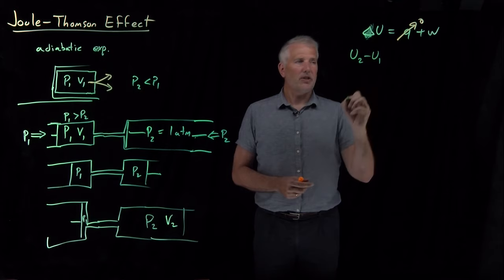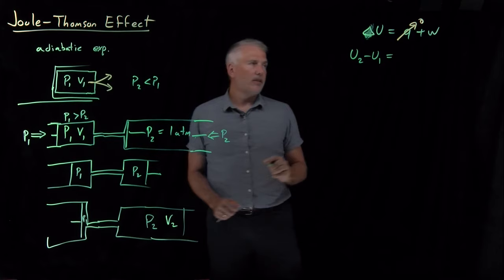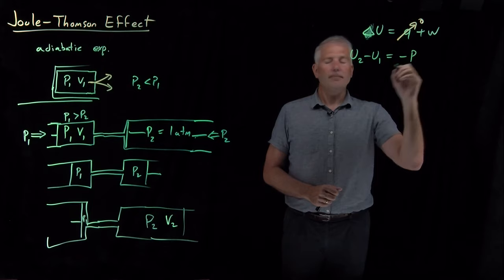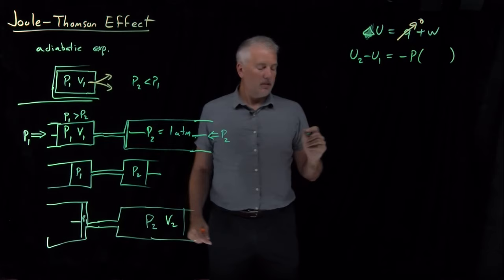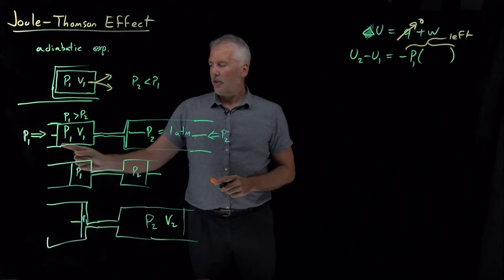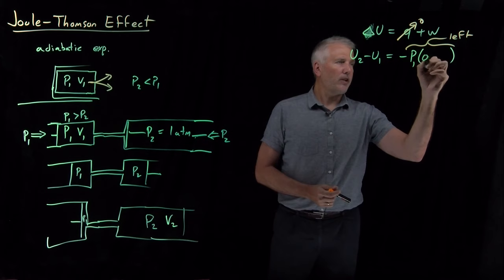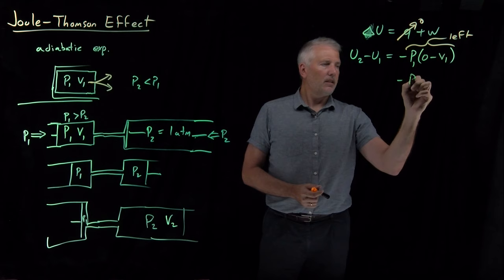The work on the left, so I've got work is always minus P times dV, or delta V. On the left, let's mark these on the left side. The external pressure was P1. The change in volume, I went from a volume V1 down to a volume of V0. So the change in volume was final volume minus initial volume.